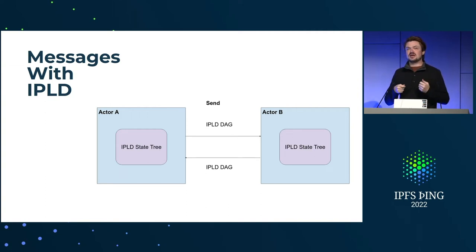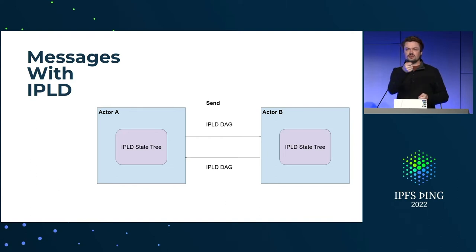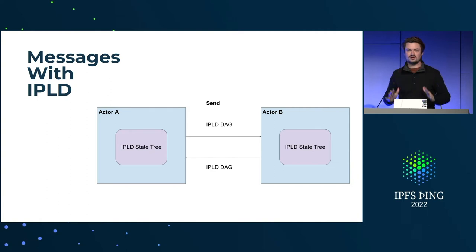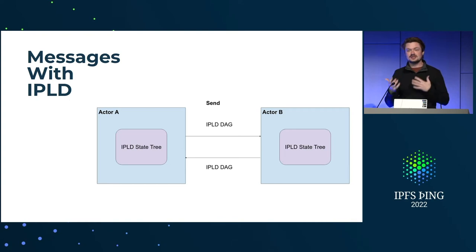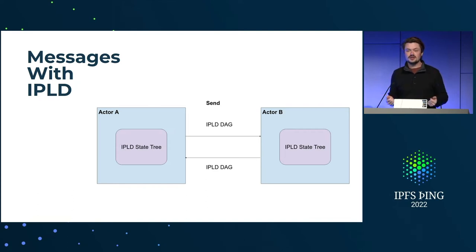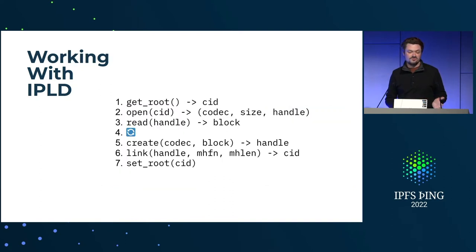For example, instead of making a bunch of calls into an actor to read state and understand what it's doing, I can just say: what is the current state of your registry? It just sends me its registry. I can't modify it because it's copy-on-write — it's IPLD and immutable. But I can look at it and do whatever I want. If I do want to modify it, I edit it locally, send the edited version back, and the target actor checks whether the edit is valid — are these operations allowed? If so, it saves it. This is something that's just not possible in any other system. That's the message side of working with IPLD.